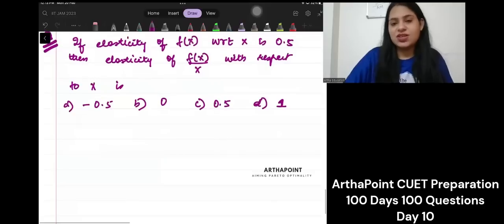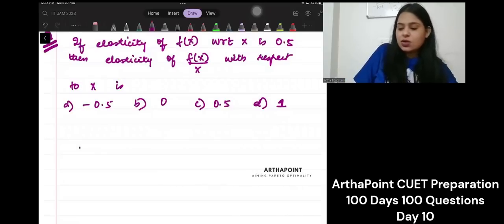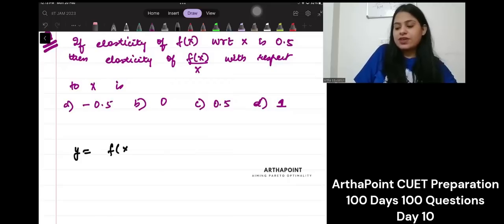So, let's see this. There are two ways to solve this question. Let's say I take y equals, let me first show you what you would have done. Let's say y is equal to fx by x.